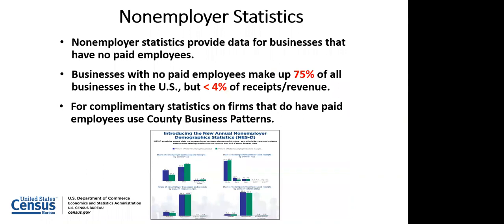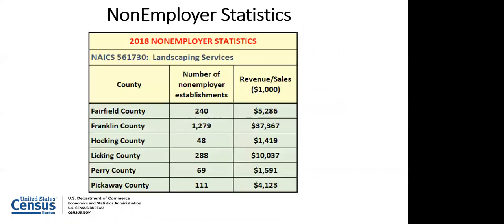We also have Non-Employer Statistics. County Business Patterns covers businesses with employees; Non-Employer Statistics covers sole proprietors — businesses with no employees. They make up 75% of businesses in the United States but account for less than 4% of revenue. Here's Non-Employer Statistics for landscaping in those six counties: Fairfield County has 240 non-employer landscaping businesses — basically sole proprietors driving around in their trucks — accounting for over $5 million in revenue. You use both datasets together to see the total number of landscaping businesses in any given county.